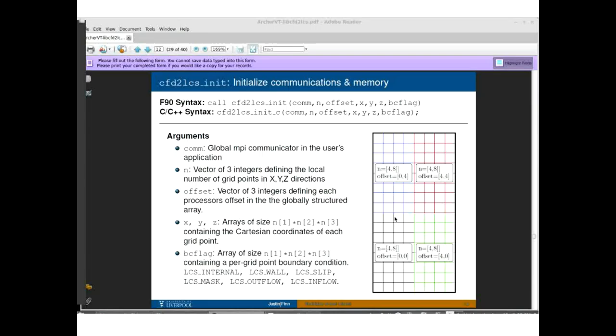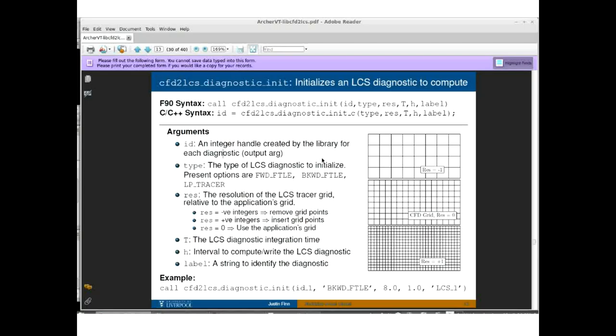We're then going to pass the X, Y, and Z coordinates of this grid. This will be arrays of size N1, N2 times N3, just the Cartesian coordinates. And then finally, we're going to pass an integer array that corresponds to a boundary condition for each grid point. Each of these grid points is going to have a tag associated with it, which allows us in the library to understand what kind of boundary condition is at that point. If you look at the manual, there's several options that hopefully should allow us to do quite a variety of simulations or work with a lot of different conditions.